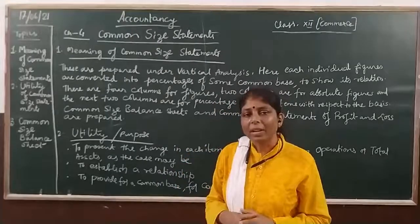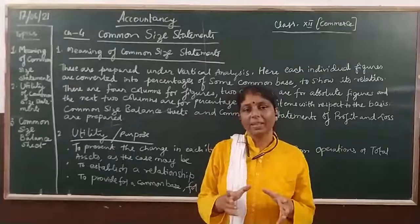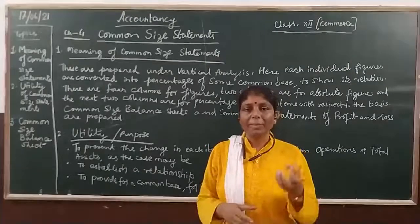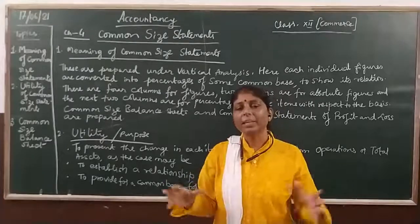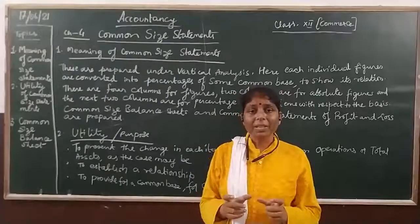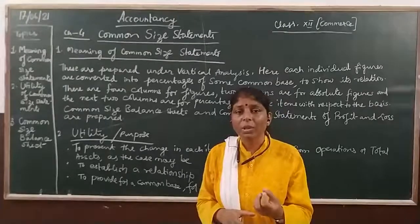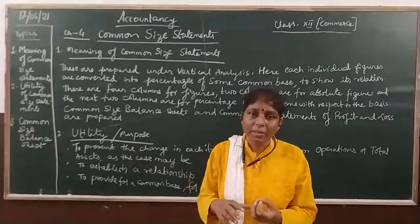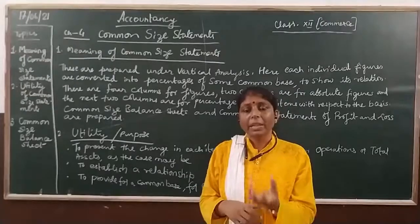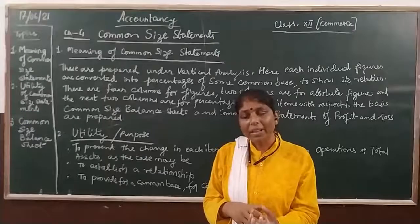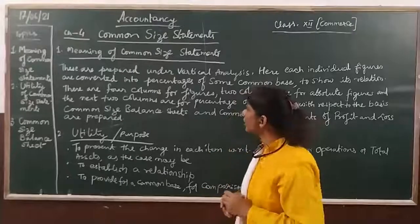What do we do in the common size statement? The difference is that we take some basis here — a particular item whose percentage is 100 — and on that basis, we find out the percentage of all other items. That means we find out the common relation between all the items on the basis of one common item.